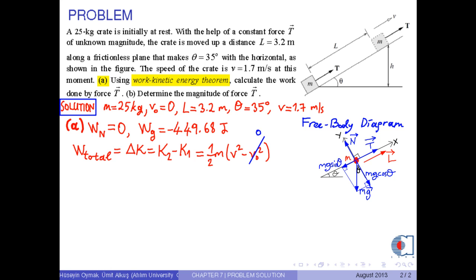Here, the initial velocity V zero is zero, then we obtain delta K equals 1 over 2 M times V squared. Also, total work is equal to Wn plus Wg plus Wt, where Wt is the work done by force T. Here, Wn is equal to zero.